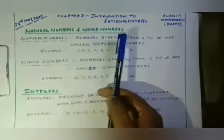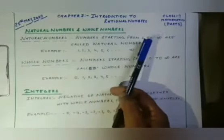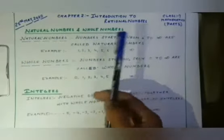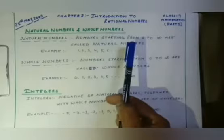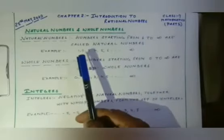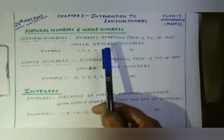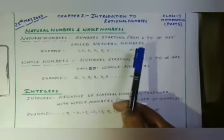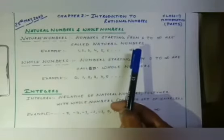Numbers starting from 1 to infinity are called natural numbers. For example: 1, 2, 3, 4, 5, 6, 10, and so on to infinity.